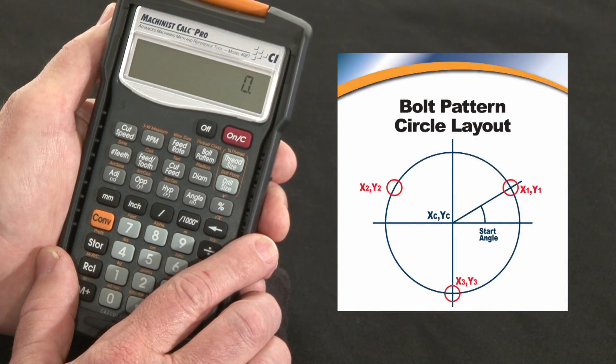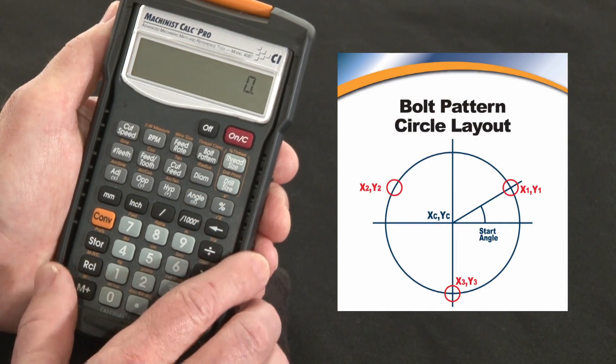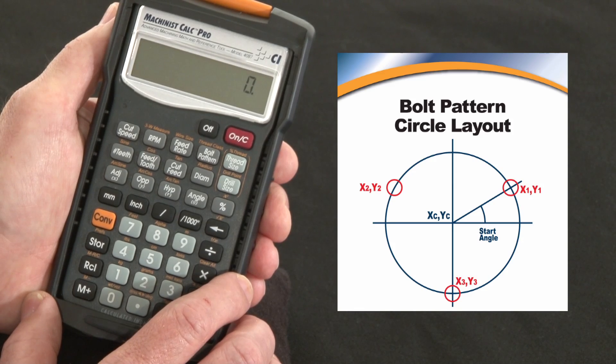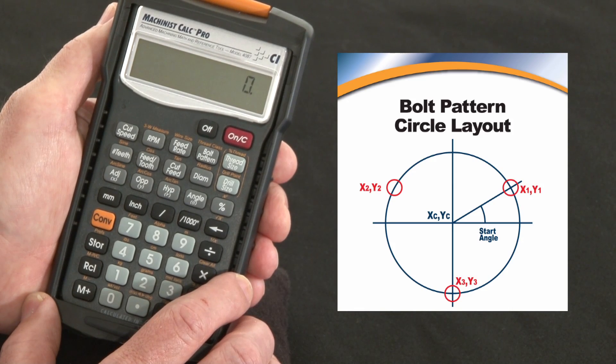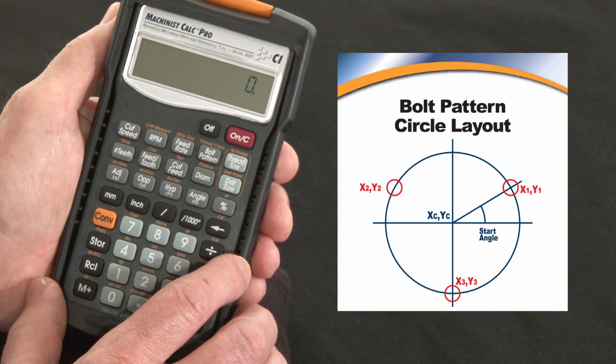Now let me show you how the bolt circle pattern function works on the Machinist Calc Pro. It'll give you all your XY coordinates for any size circle and any number of bolts, no matter where the origin point is.